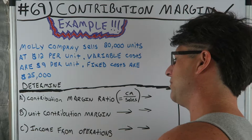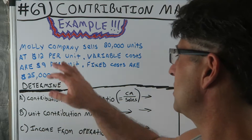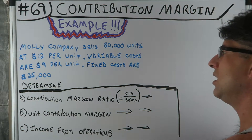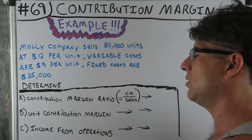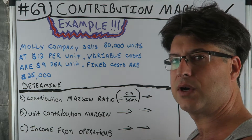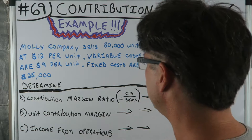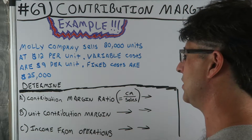We have three things to determine: the contribution margin ratio, the unit contribution margin, and income from operations. I can look at this and figure it all out fast, but we're going to go through it step by step.